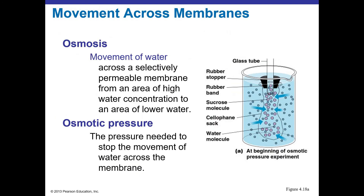Solutes like dye molecules and sugars often can't get across a membrane easily, so we often talk more about the diffusion of water. Osmosis is the passive movement of water following its concentration gradient from high to low — the same principle as for solutes. Equilibrium is referred to as osmotic pressure — the pressure needed to stop the net movement of water across the membrane.